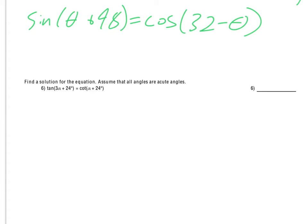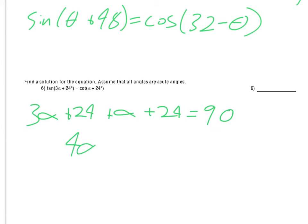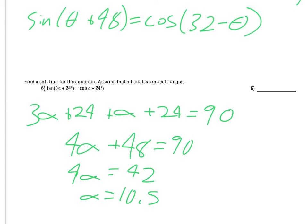For problem 6, the tangent equals the cotangent since they're co-functions, so long as the angles are complementary. So in order to solve for alpha, we say that 3 alpha plus 24 plus alpha plus 24 equals 90 degrees — stating that those angles are complementary. We combine like terms to get 4 alpha plus 48 equals 90. Subtract the 48, we get 4 alpha equals 42. Divide by 4, and we get alpha equals 10.5. If we plug 10.5 in, we can verify those angles would be complementary.